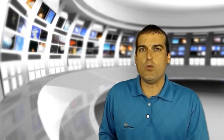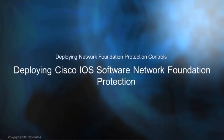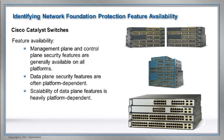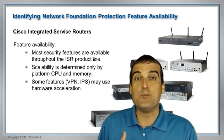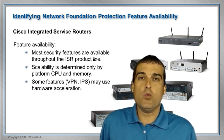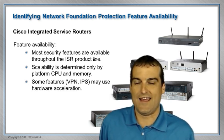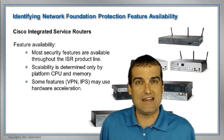In this course, we'll walk you through how you can take these Cisco routers and switches and utilize the tools inside them to secure the data plane, to secure the control plane, and to secure the management plane — all taking advantage of the built-in capabilities. One example on the Catalyst switching side would be private VLANs and VLAN-based access control lists in order to secure data plane traffic.